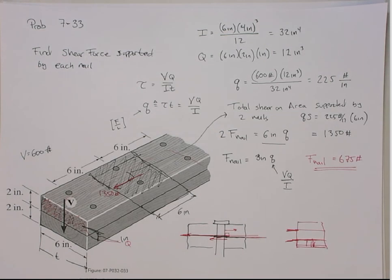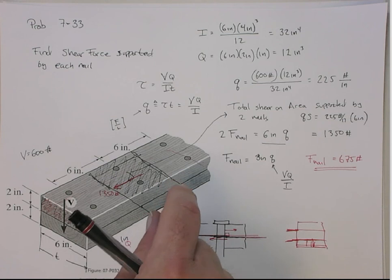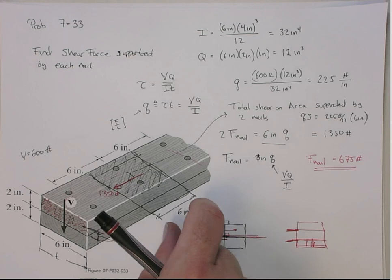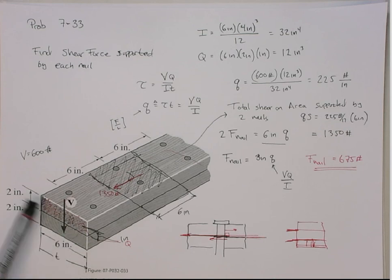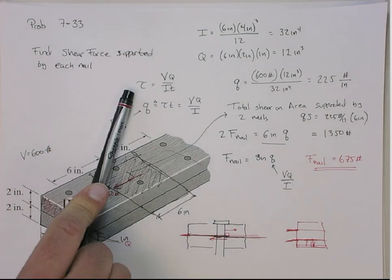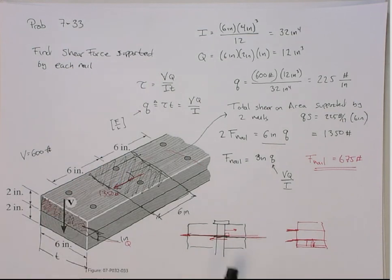So that's the answer. Just to review: it's still just VQ/I, or VQ/IT. Usually whenever you have some sort of fastener problem, you're going to use the shear flow instead of the actual shear stress. The shear flow gets multiplied by the spacing, and that gives you the total force at each fastener location. The other key concept is that we need to get the transverse bending shear at the plane where the fastener is in shear. In this case it's the neutral axis, so that's the Q we use. If we had three boards, we wouldn't use Q at the midpoint — we'd use the one at the one-third location.